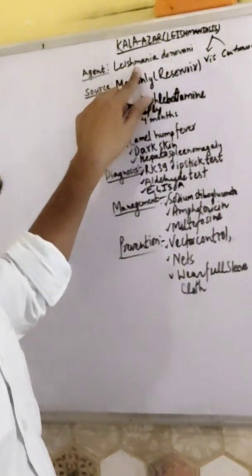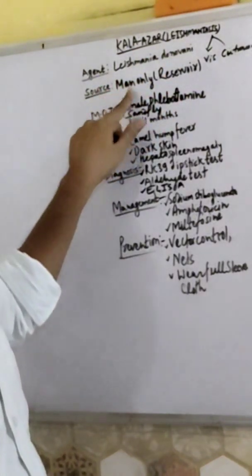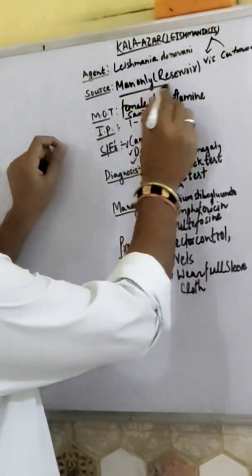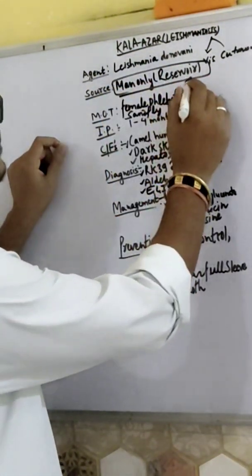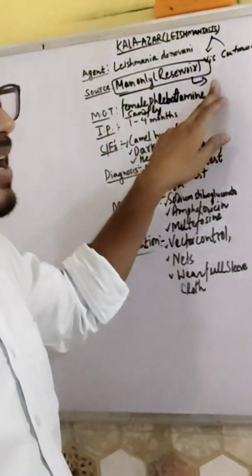The causative agent is Leishmania donovani. The source is man only. In the case of Indian Kala-azar, man is the only reservoir.